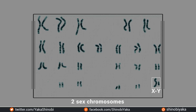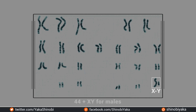To summarize: females have 44 autosomes and 2 X chromosomes, and males have 44 autosomes, 1 X chromosome and 1 Y chromosome. In articles you might see this written as 44+XX for females and 44+XY for males. This is a convention I will sometimes use in this and later videos.